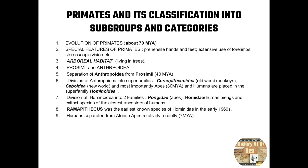Hominoidea was divided into two families: Pongidae, which were usually apes, and Hominidae, which were human beings and extinct species of the closest ancestors of humans. Dryopithecus was the earliest known species of Hominidae, discovered in the early 1960s in India. According to the latest research, humans separated from African apes relatively recently — about seven million years ago.